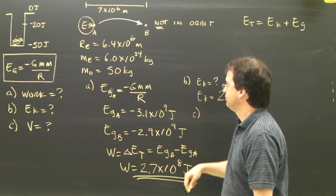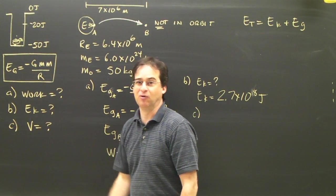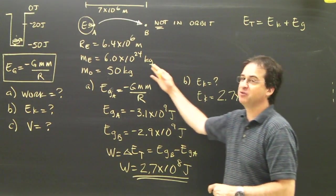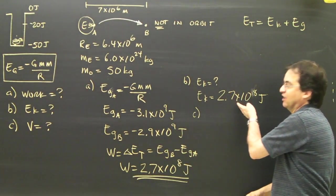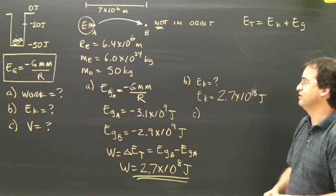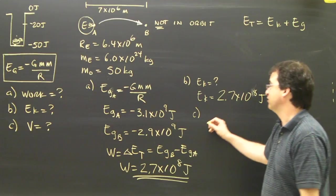Part C, how fast would it have to be going? Well, whenever you're asked how fast something needs to be going, when you're dealing with energy, all you need to know is the kinetic energy. I know the kinetic energy is 2.7 times 10 to the 8. So I really do know the velocity. I just got to plug it in.